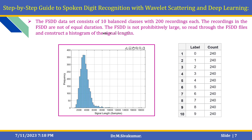After simulating the data, the FSDD — Free Spoken Digit Dataset — consists of 10 balanced classes with 200 recordings each. The recordings in the FSDD are not of equal duration. Here is a histogram of the recording files, showing 200 recordings across the 10 balanced classes.